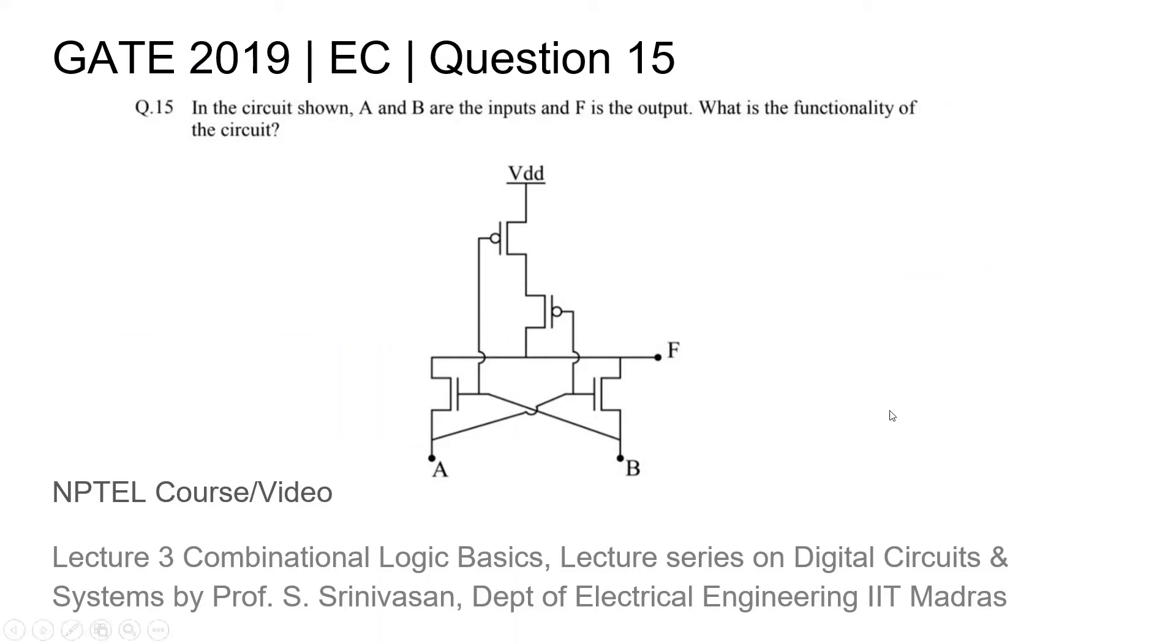This is question 15 from the GATE 2019 EC paper, in which a circuit is shown having inputs A and B and output F. We would like to know what the functionality of this circuit is. Underneath the question, you will find the title of the NPTEL course or video that is relevant to this topic.